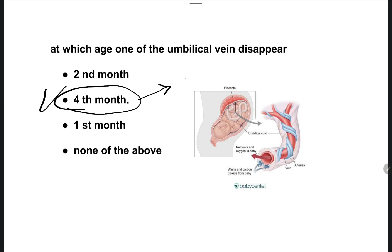At the fourth month, the right umbilical vein disappears. After that, the umbilical cord consists of one vein and two arteries.